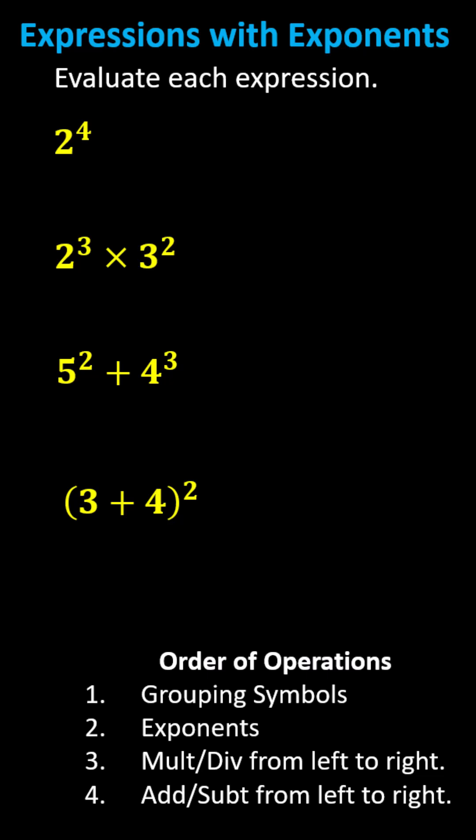Evaluate each expression. First, we have 2 to the fourth power. Because the base is 2 and the exponent is 4, we have four factors of 2, meaning 2^4 = 2×2×2×2 = 16.